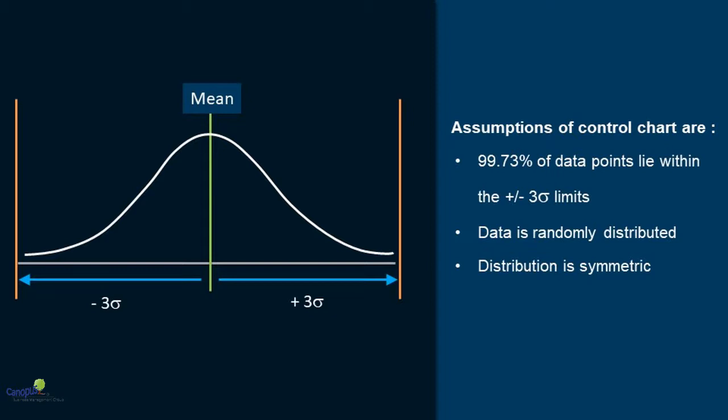In other words, plus or minus three sigma limits from the mean. The second is that the data is randomly distributed. There are no patterns in the data. And the third, that the distribution is symmetric. If you are able to recollect, these three principles come from the theory of normal distribution.